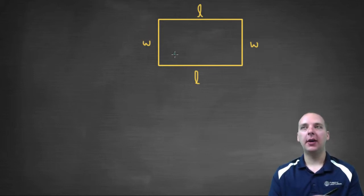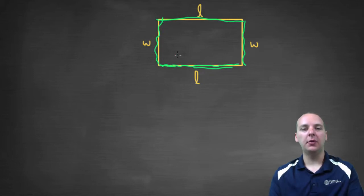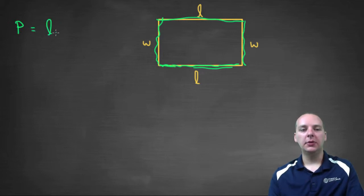Let's say we were trying to find the perimeter of this rectangle. For perimeter we're basically just going to add up all the sides, so you'll have L plus W plus L plus W. So the perimeter, which we'll call P, equals L plus W plus L plus W.